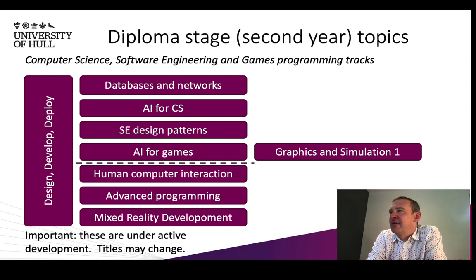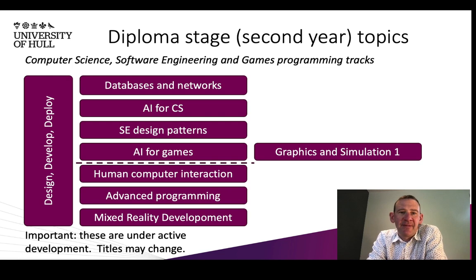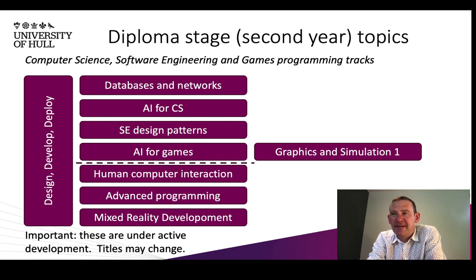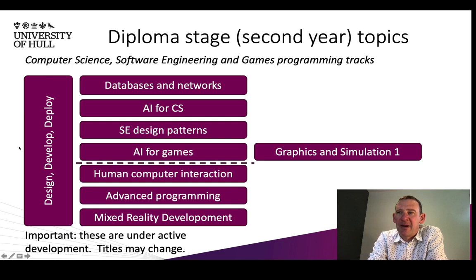Moving into second year — the diploma stage on our Computer Science suite — we have our backbone structure, now a module called Design, Develop, Deploy. This runs over both trimesters and takes students through the full software development process: from a conceptual start, understanding requirements with different methodologies, to developing and designing, then through to deployment and actually shipping software through different infrastructures. Having this larger module gives us space to take on bolder, industry-standard ways of working with software.